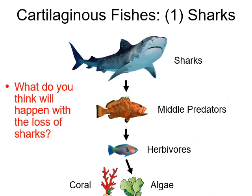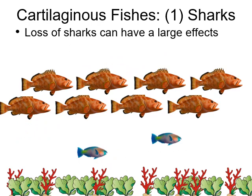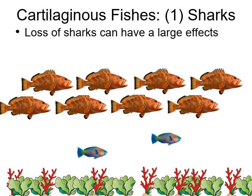When you lose sharks from a particular area, you tend to see lots of middle predators, which means very few herbivores. As a result, algae goes out of control, grows unchecked, and tends to smother the corals. I've been scuba diving in places with sharks and places without sharks, and one definitely notices the difference. Without sharks, you see tons of middle predators, very few herbivores, and a lot of algae. Where sharks are present, you see far fewer middle predators, lots of herbivores, and as a result, lots of coral because the algae is being kept in check.